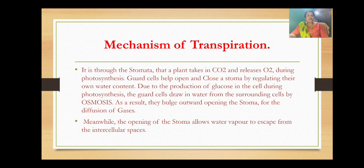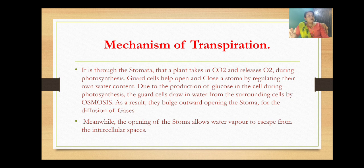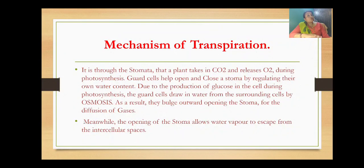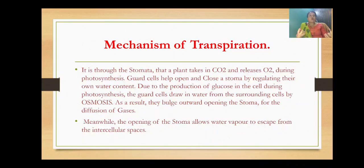Guard cells open during the day and close during the night due to the production of glucose. The glucose produced is the product formed during photosynthesis — the food prepared by the plants during photosynthesis is in the form of glucose. Due to this production of glucose in the cell during photosynthesis, the guard cells draw in water from the surrounding cells by the process of osmosis.